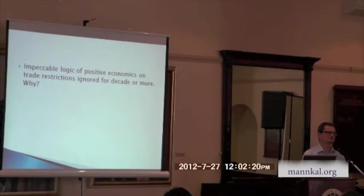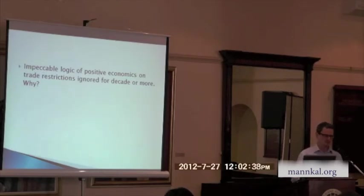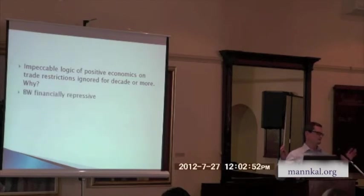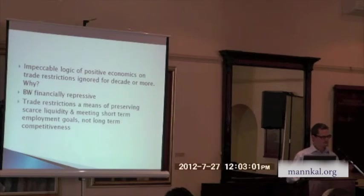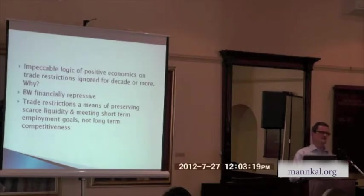The impeccable logic of positive economics and the evidence provided on trade restrictions in Australia and New Zealand in the 1960s and 1970s was pretty much ignored in policy. Why was this? I think it was because the Bretton Woods system that Australia and New Zealand were operating in — the overarching financial architecture — was financially repressive in the sense that the imperative of reserve maintenance and preservation was a key consideration of policy making. Trade restrictions were a means of preserving scarce liquidity, of responding to what was thought to be — and the term often used was — the 'foreign exchange constraint' or the 'export gap'. We don't use those terms anymore.